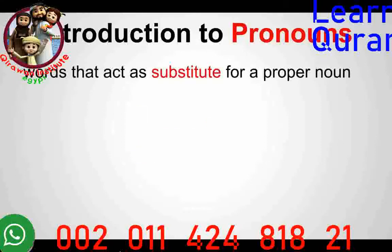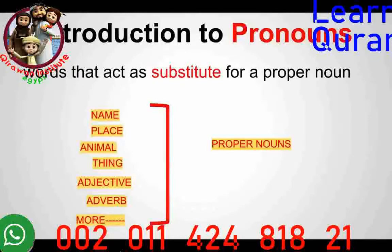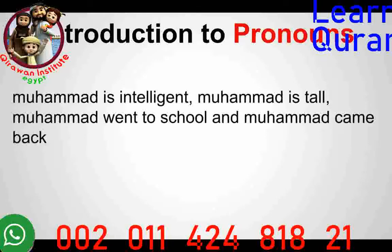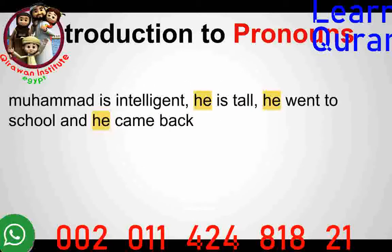So what is a pronoun? A pronoun is a word which substitutes a proper noun. We know what proper nouns are — names, places, animals, things, etc. So in a sentence, if you want to use another word instead of a name, that substitute is called a pronoun. For example, if I say: Muhammad is intelligent, Muhammad is tall, Muhammad went to school, Muhammad came back — there's too much repetition. So instead we say: Muhammad is intelligent, he is tall, he went to school and he came back. So the word 'he' is called a pronoun.